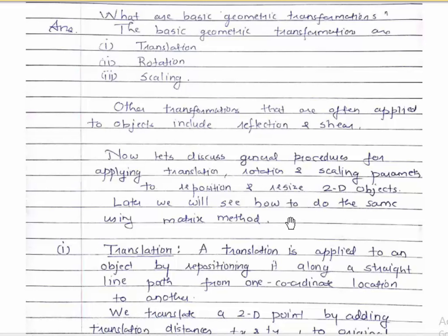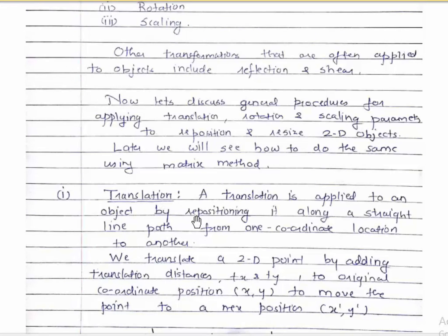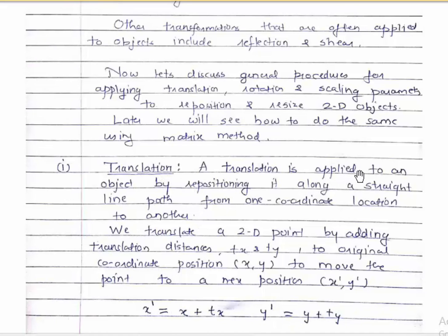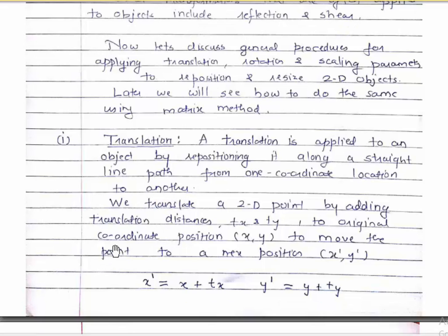First we will look at translation. A translation is applied to an object by repositioning it along a straight line path from one coordinate location to another. Let's suppose we have a line, and we consider one point of that line first. Suppose its coordinates are x comma y — those are the original coordinates — and then we have to move that point to a new position x-dash comma y-dash.